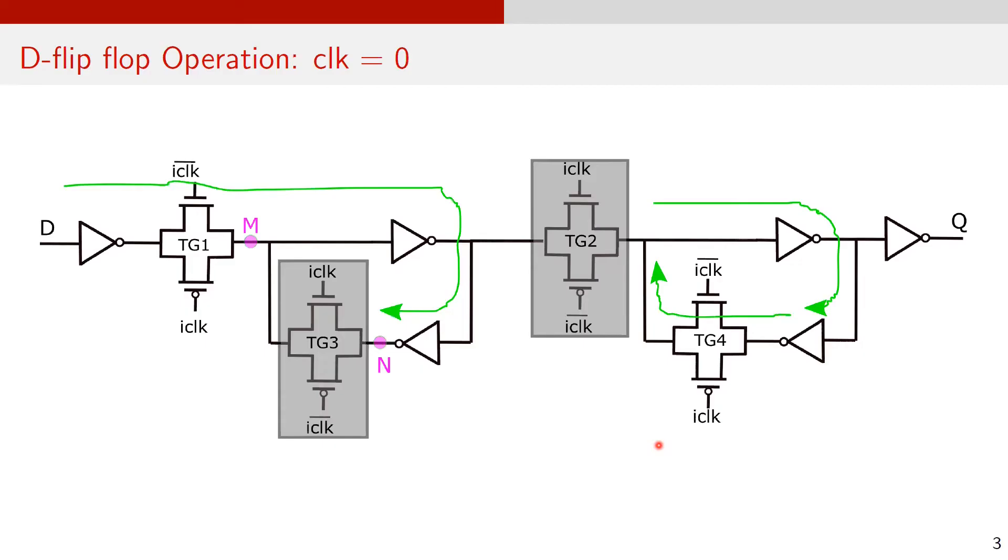Now, let's observe the state of the gates when clock equals zero. In this case, I-clock is zero and I-clock bar is one. In the flip-flop, the transmission gates TG1 and TG4 are on, while TG2 and TG3 are off.